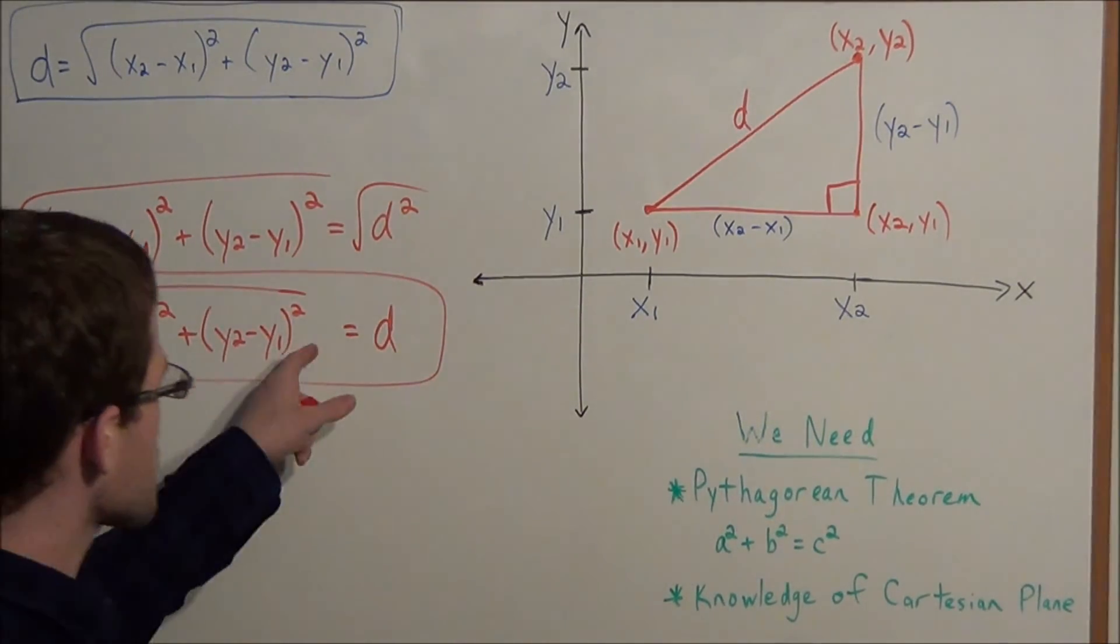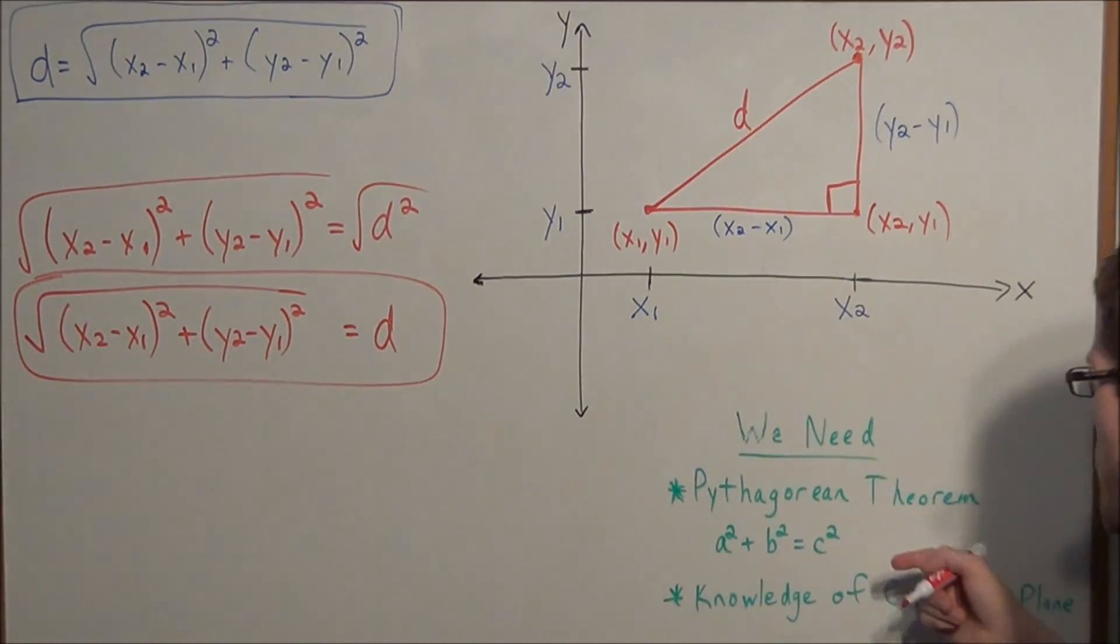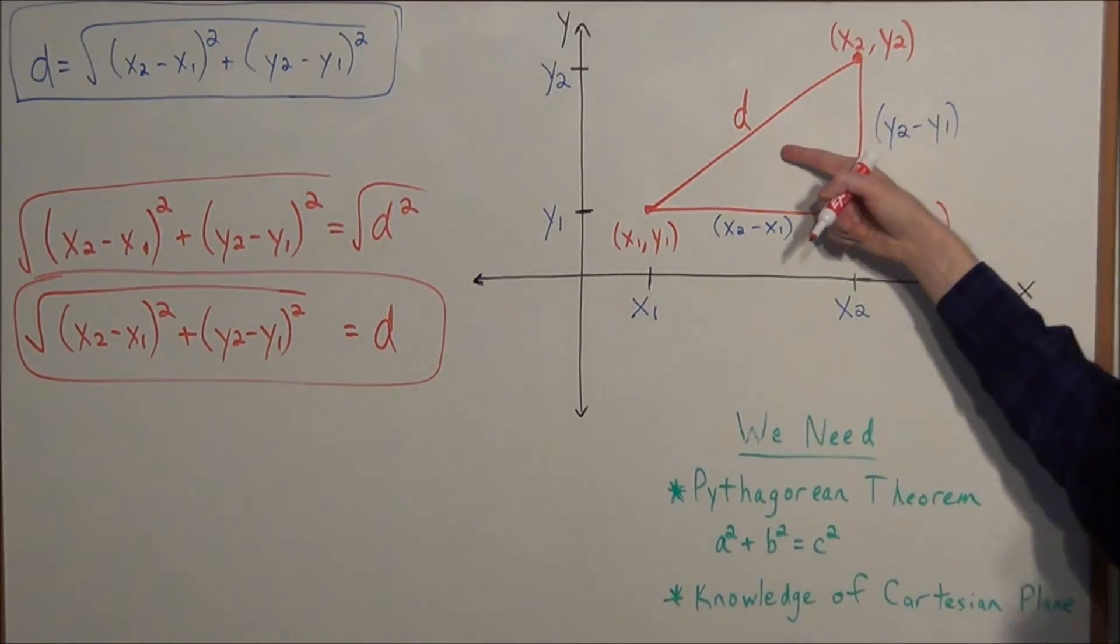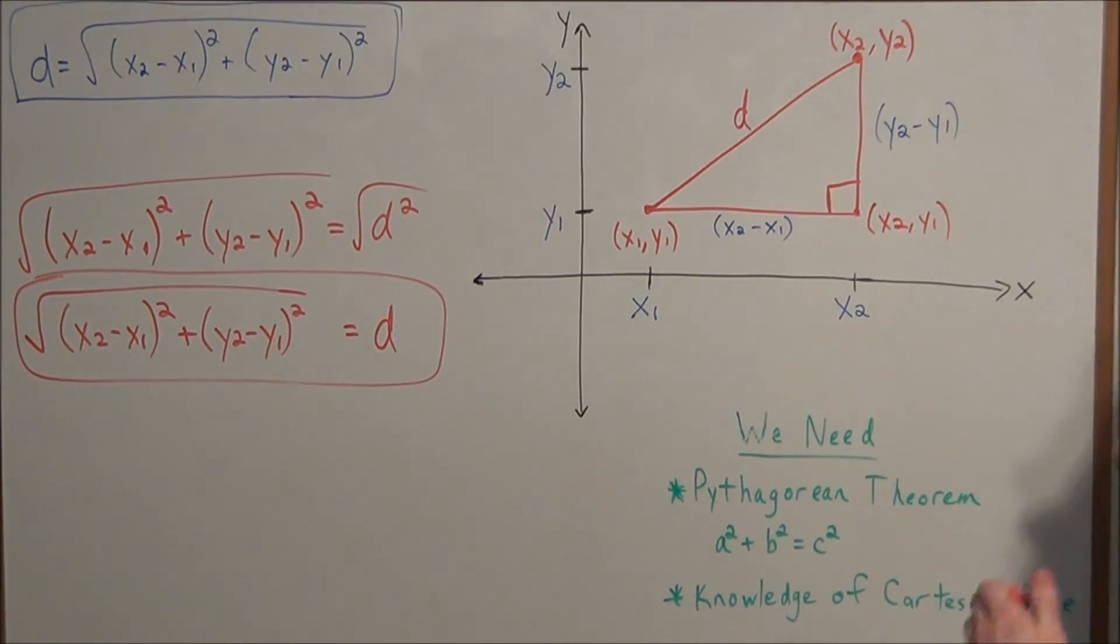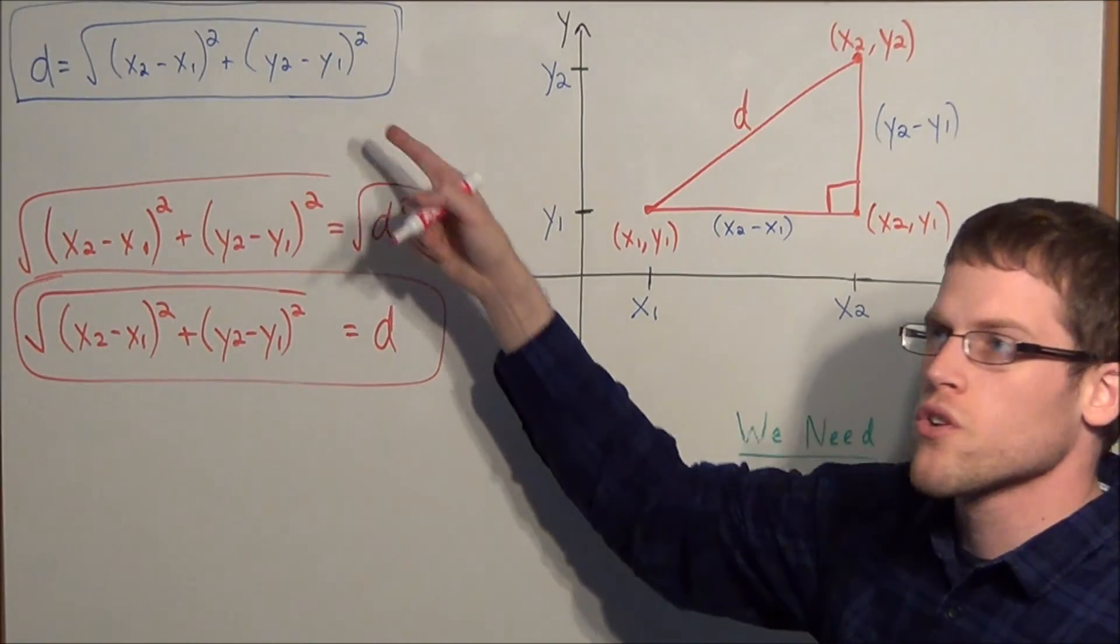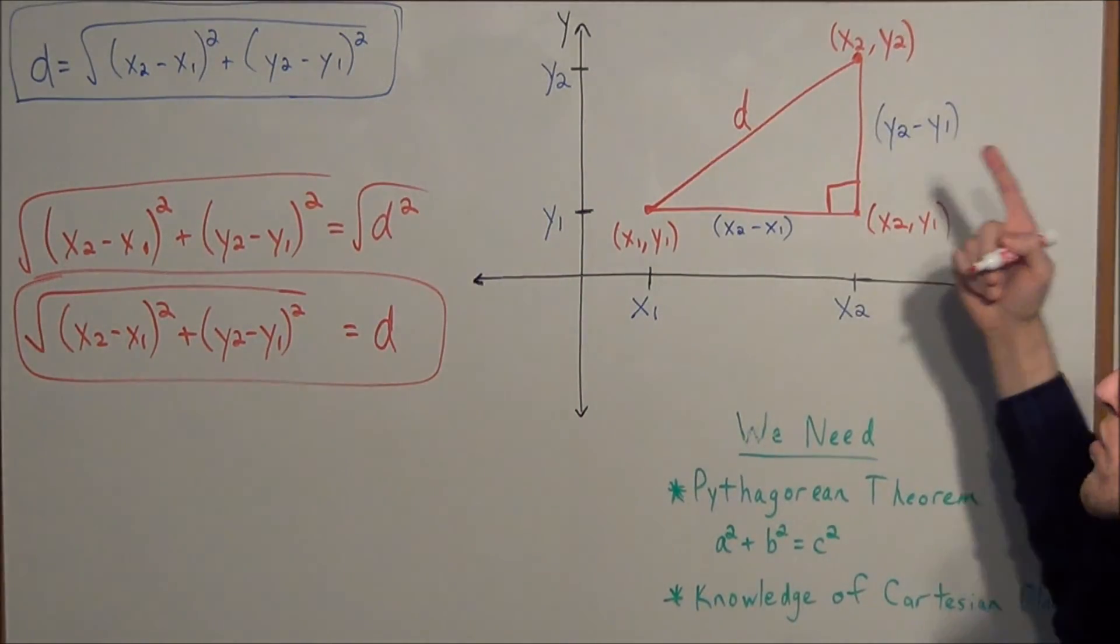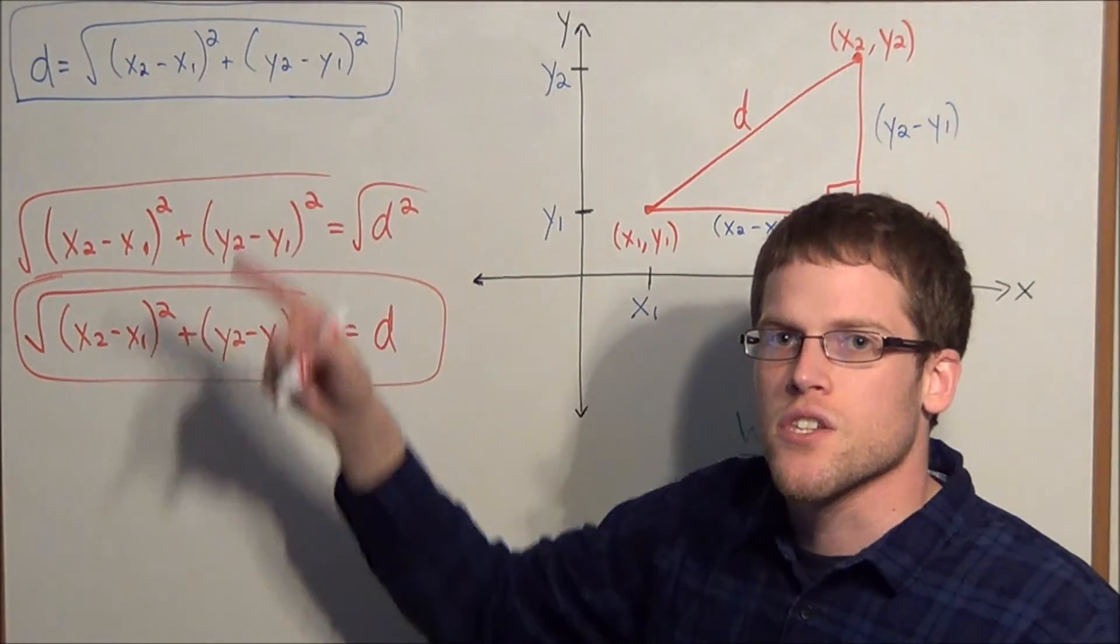So this proof shows that the distance formula is just another way of restating the Pythagorean Theorem on the Cartesian plane. It's just a little bit more useful to use the distance formula when you're looking at coordinates on the plane. Because all you need to do is just plug those coordinates into this formula.